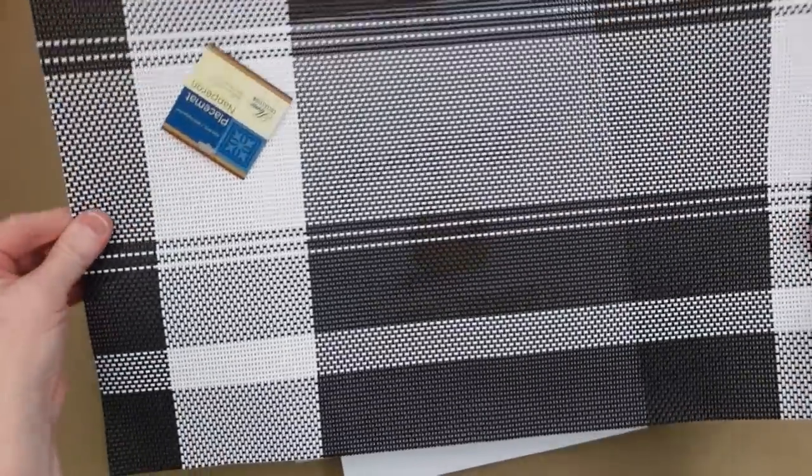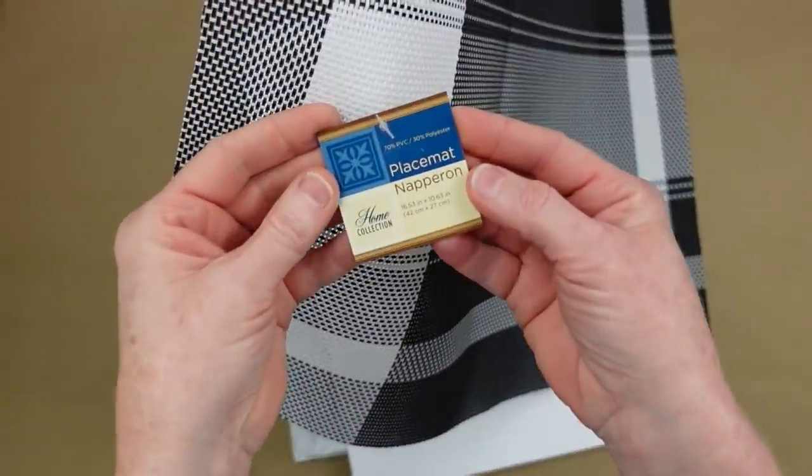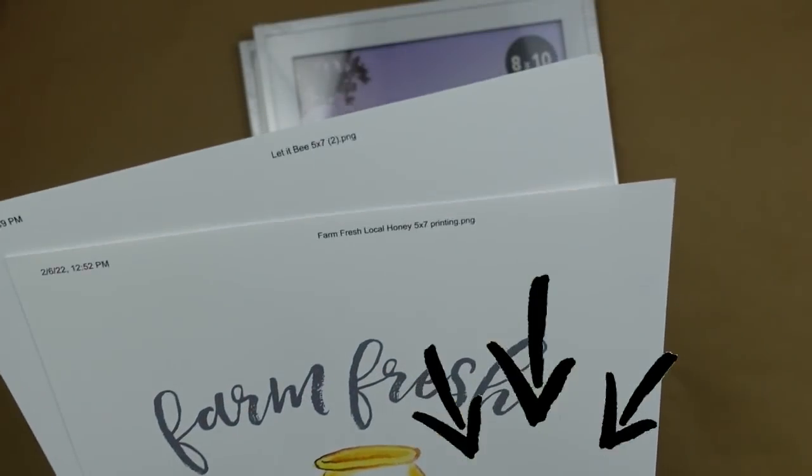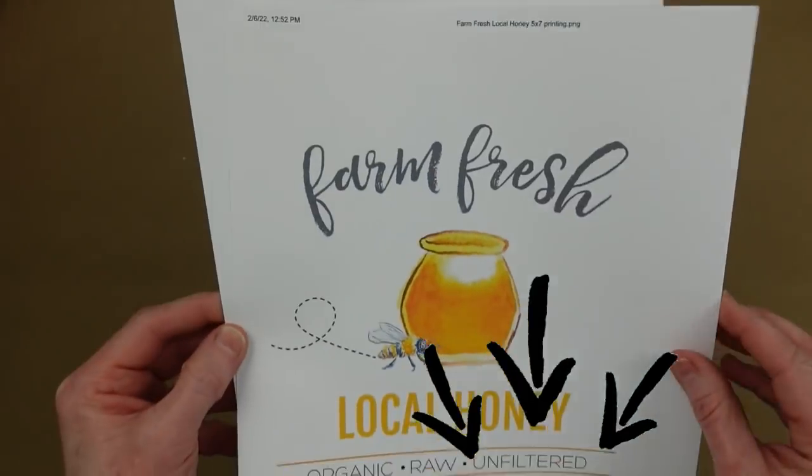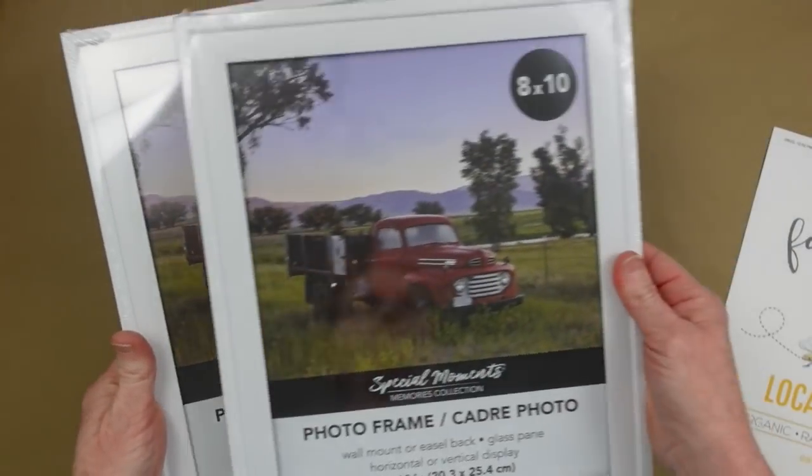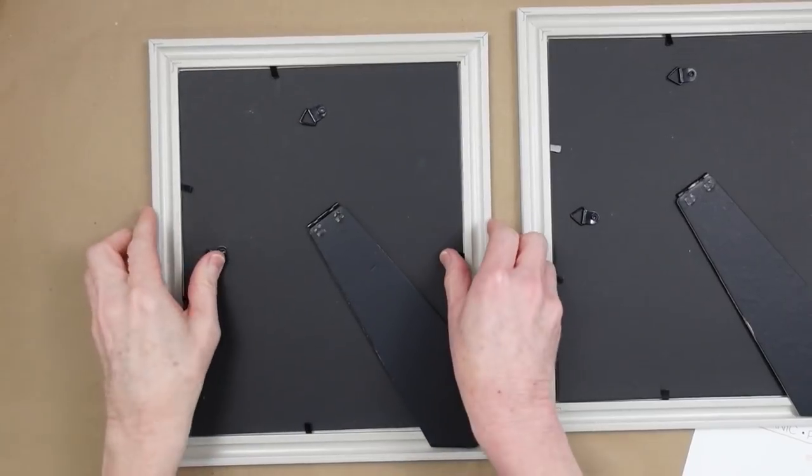We're gonna start off with a Dollar Tree placemat and then I have two printouts, I've got the links in the description box below for you, of bees and honey. These are the two white 8x10 frames from Dollar Tree.